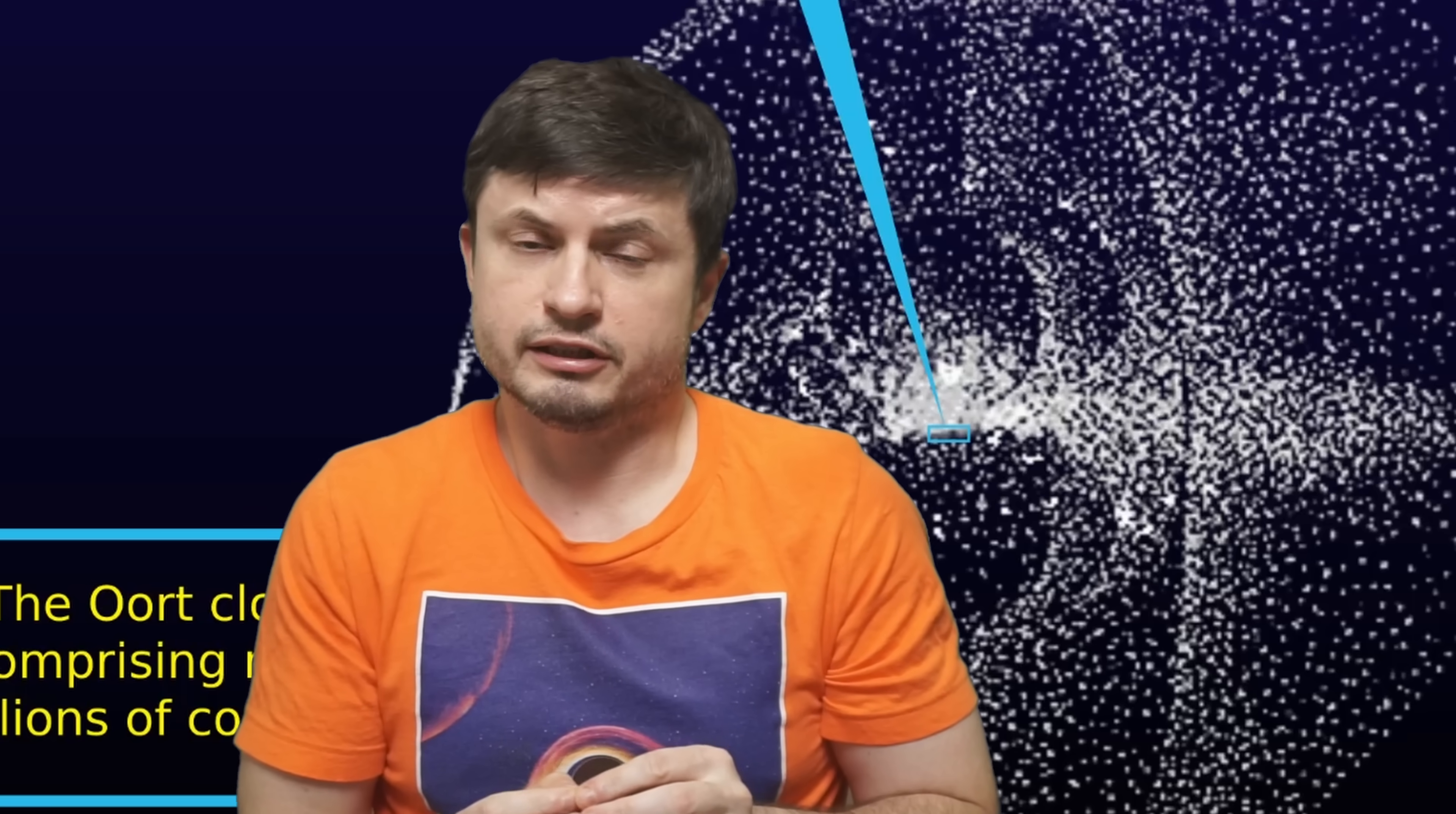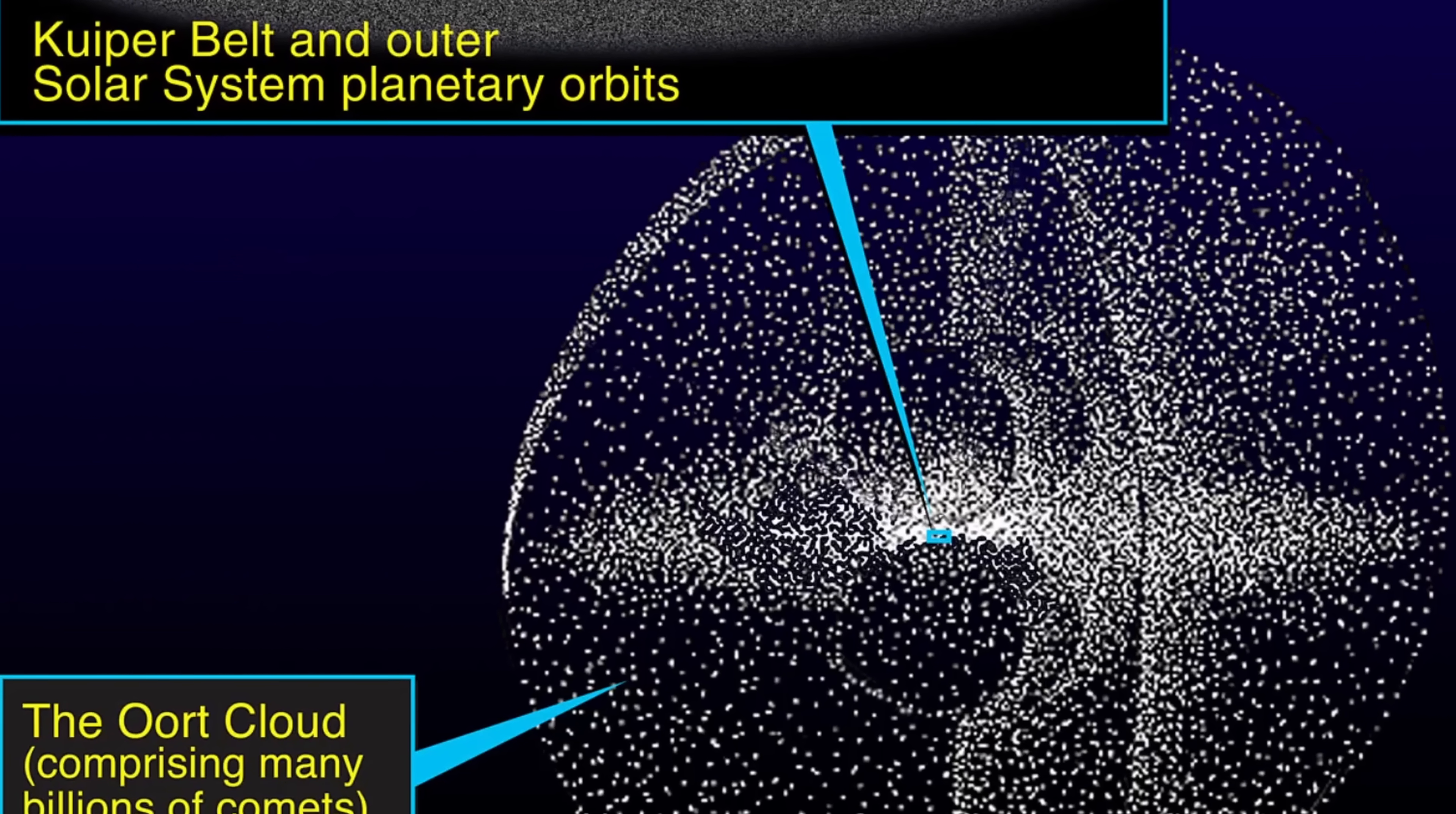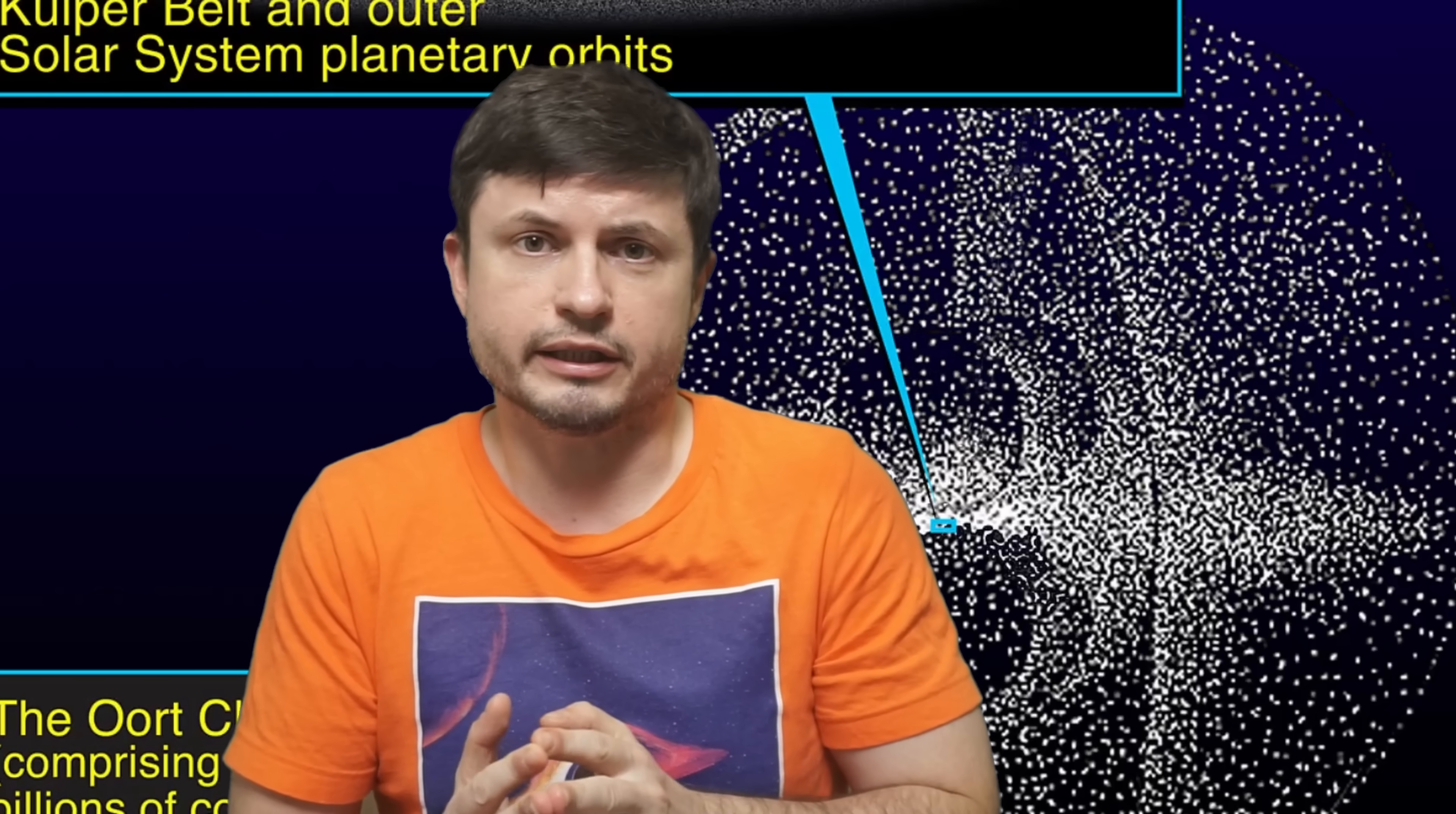Based on these predictions and simulations, we know it seems to contain at least two main parts. There is a somewhat disk-shaped inner Oort cloud, also known as the Hills cloud, named after the American astronomer who predicted it. And a much larger spherical cloud, or the outer cloud, that wraps around the sun. Here the radius of the sphere is at least two to possibly three light years.